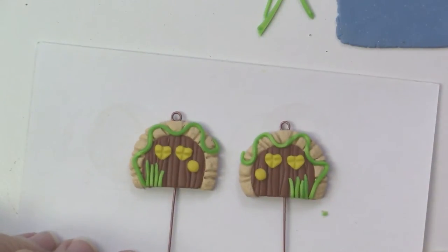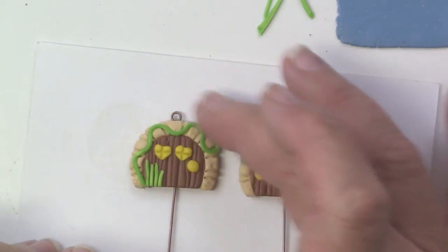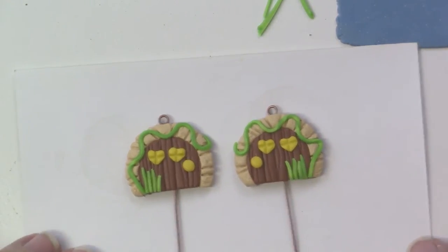You can see I've got my grasses and my stems of the garden and then I've got my vine around the door frame.